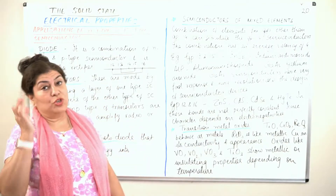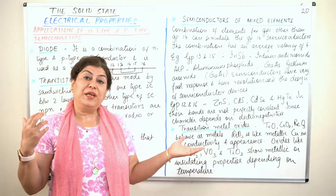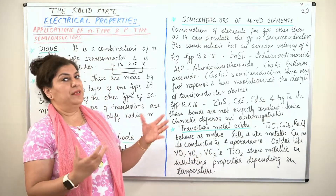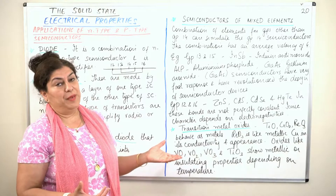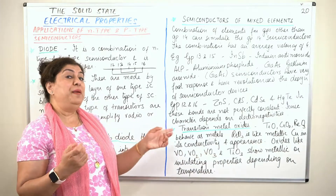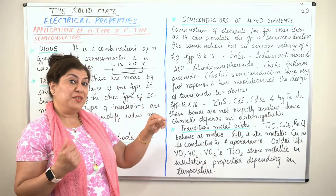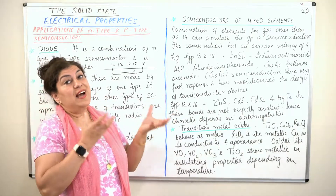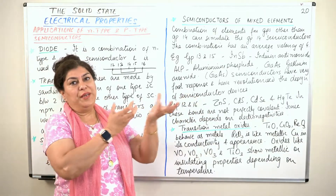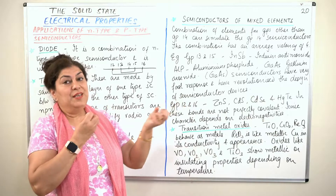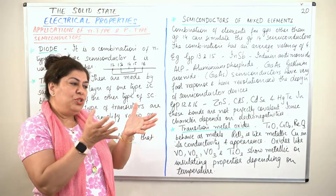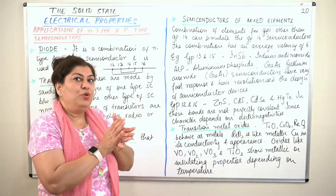The greater the difference in electronegativity, the greater the ionic character, and the better conductor it will be. But this time, the conduction will not only be by electrons but also as ions, because the ionic character is more. So both tendencies — electronic and ionic conduction — would be present.